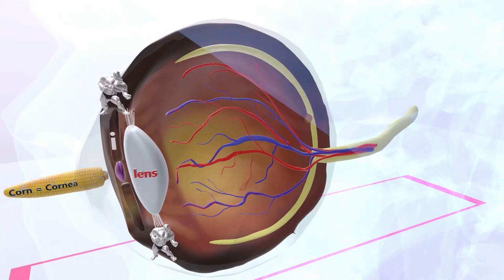Here we see the retinal vessels, which of course supply and drain blood from the eye. We see the retina in the back with the macula.